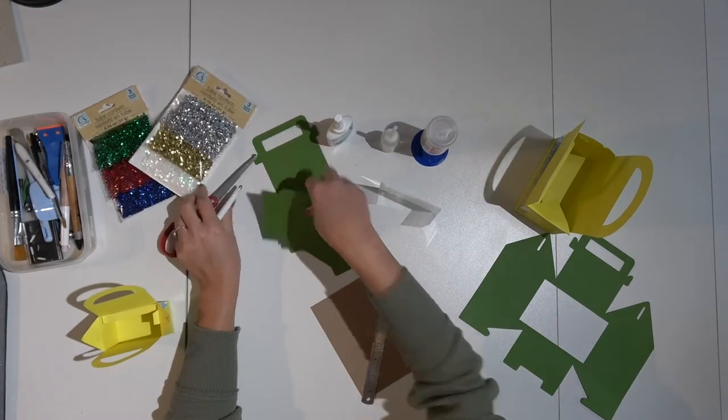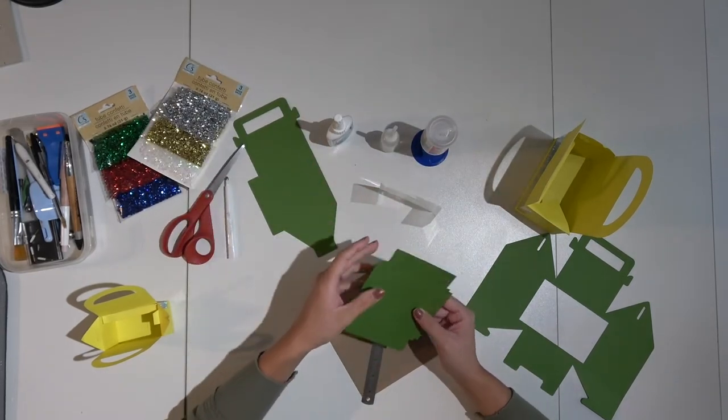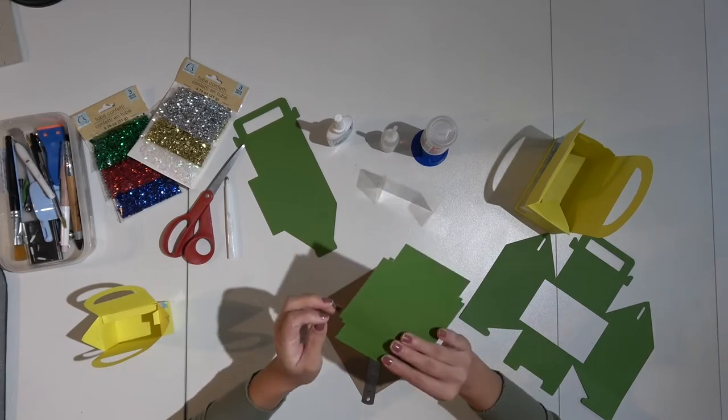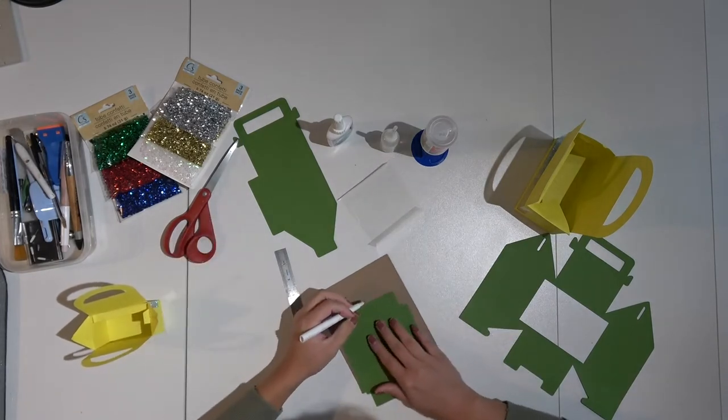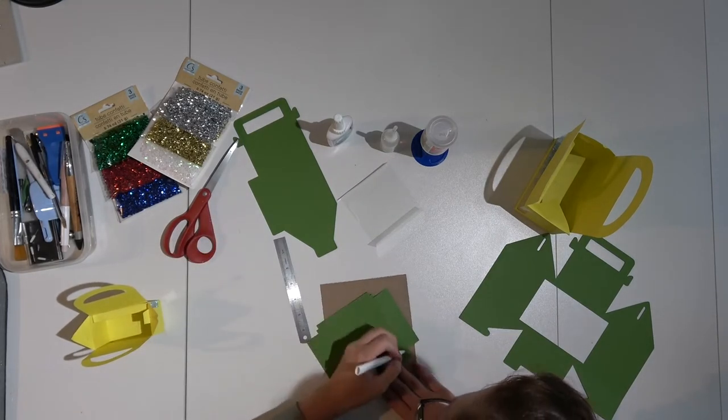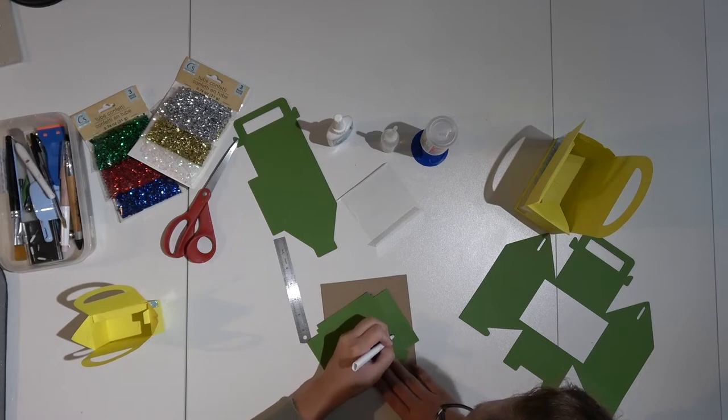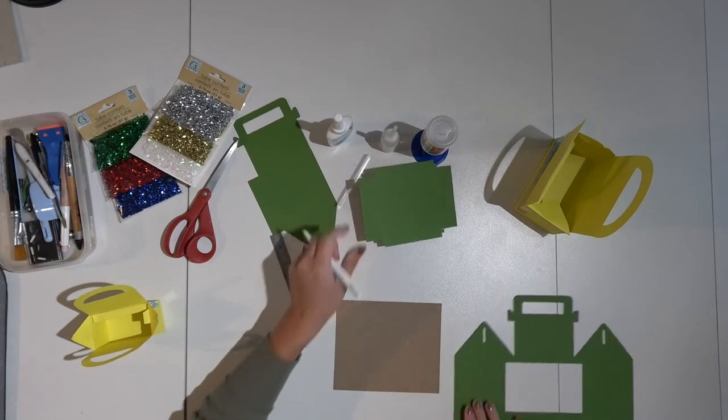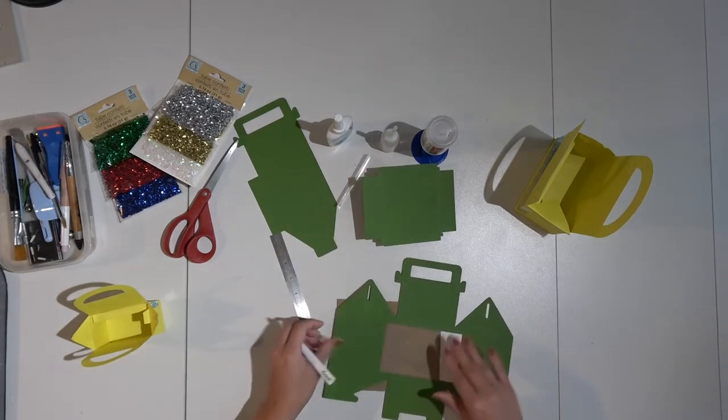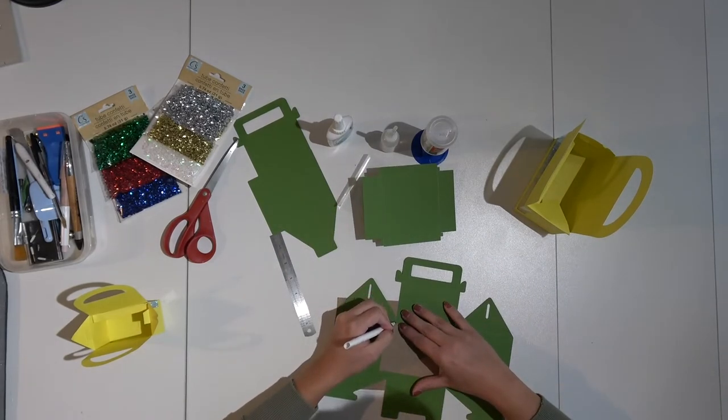Doing the same thing with what we did here with bending the creases, the pressure of the Cricut never really give it a good score mark so I'm just going to go in and I'm going to re-score these lines just a little bit more. When you have all of those done go into your bigger portion as well and make sure you get good score lines.